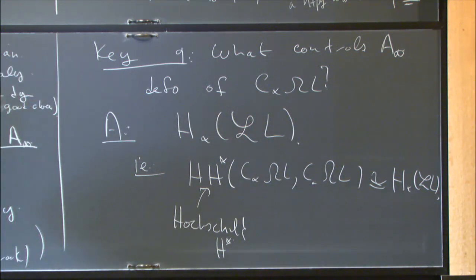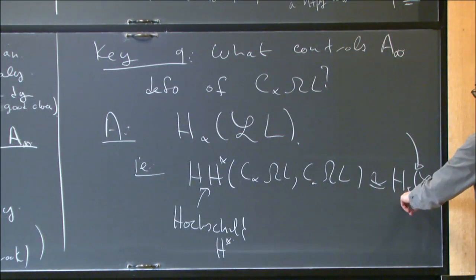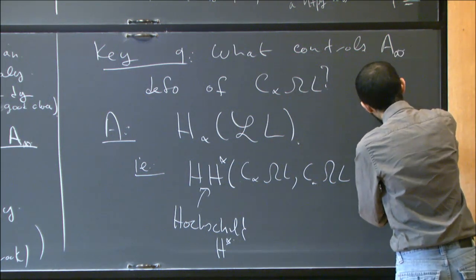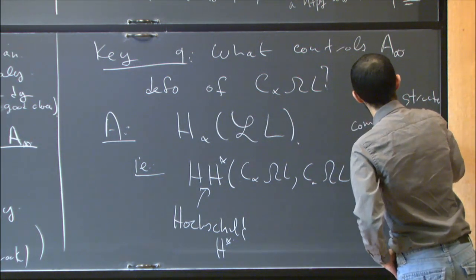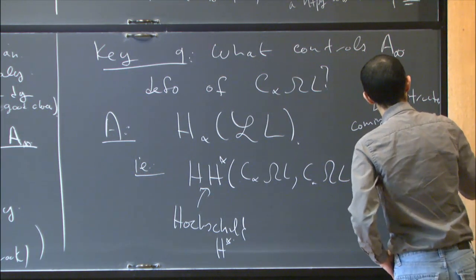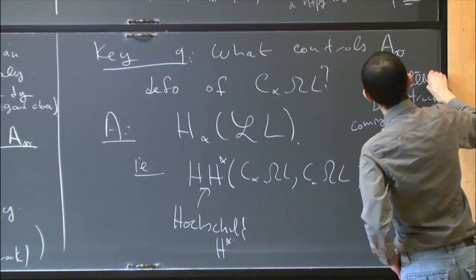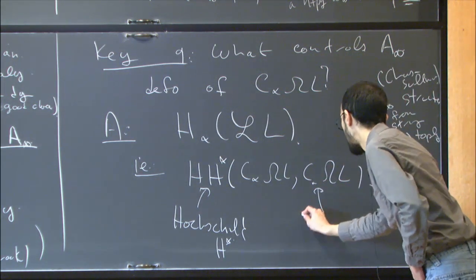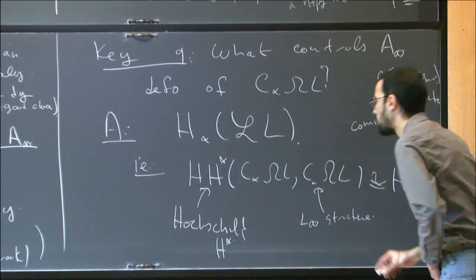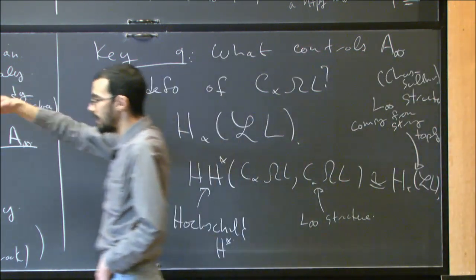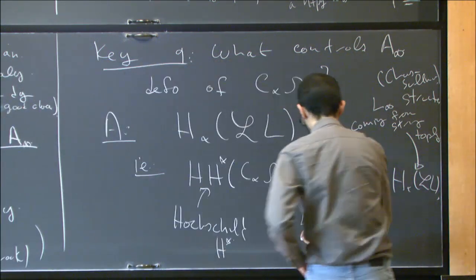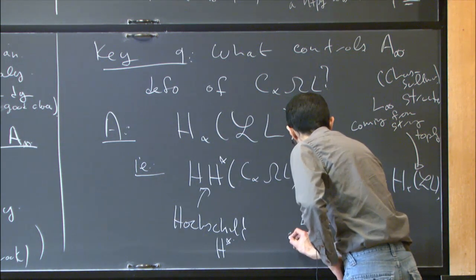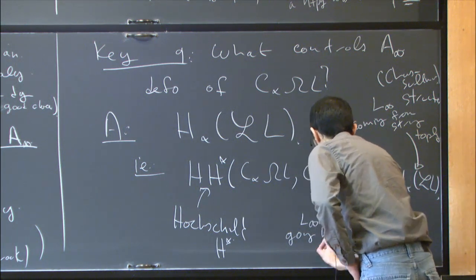This isomorphism is not just of vector spaces. The homology of the free loop space has an L-infinity structure — really I'd like to say E2, but let me say L-infinity — coming from string topology, i.e. Chas–Sullivan. There is a formalism saying whenever you see a deformation problem it's controlled by an L-infinity algebra. This goes back to Gerstenhaber.